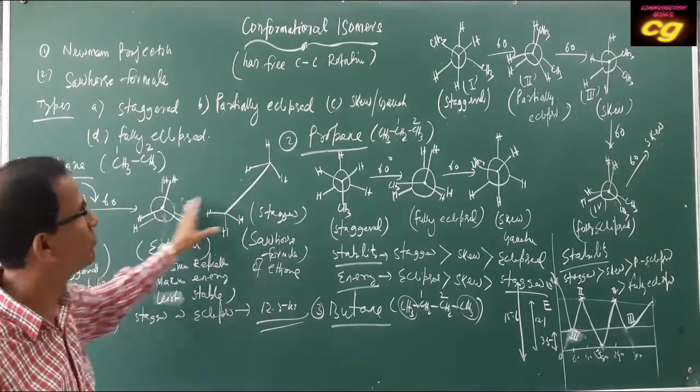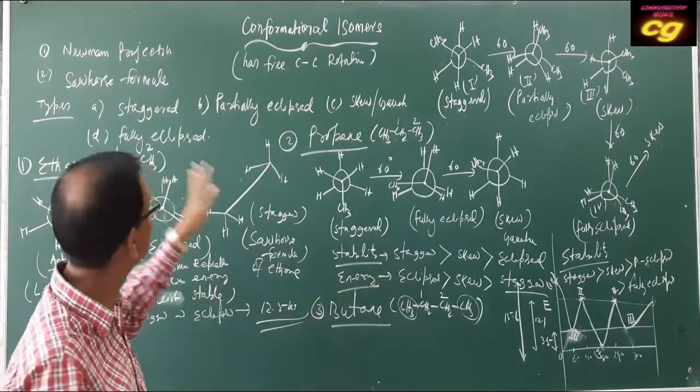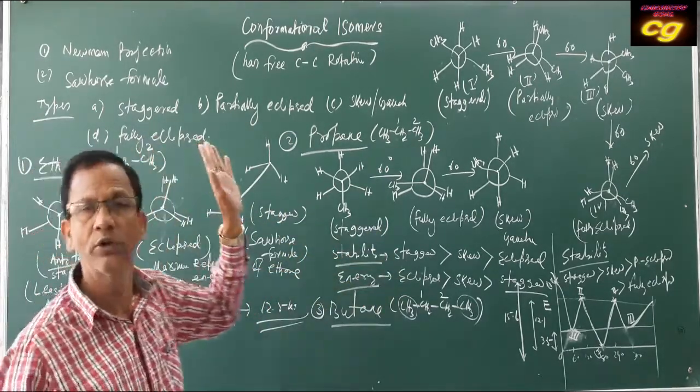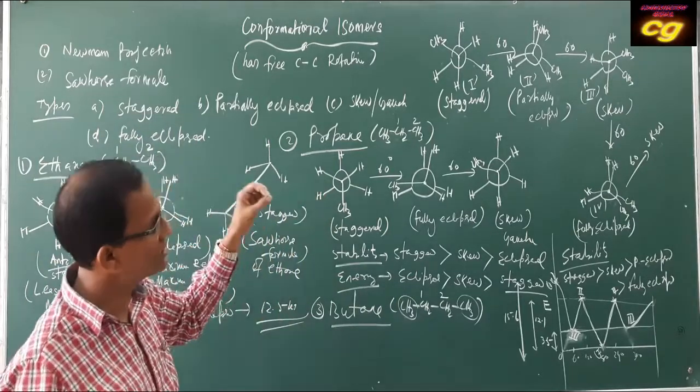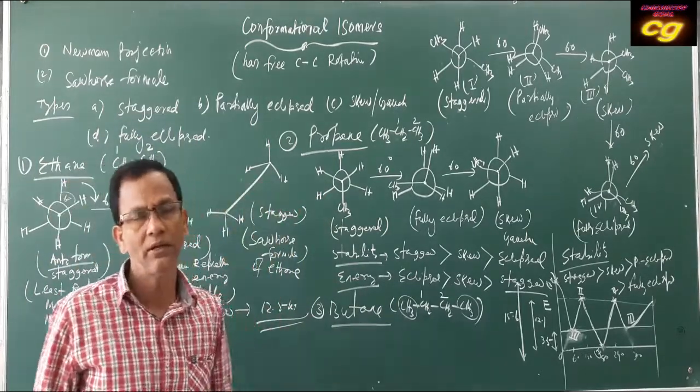This is regarding the different types of conformational isomers, their energy differences, stability, Sawhorse formula, and Newman projection formula. This is very important for your examination. Try to practice this part.